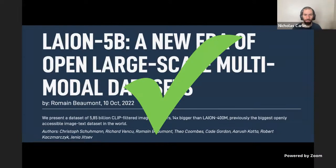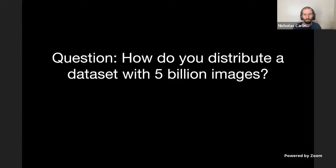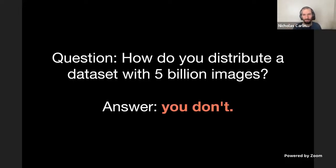So if you're going to train a model today, you're going to use something like this. But that brings up a question: how do you distribute a dataset with 5 billion images? The answer is you don't. You don't actually distribute 5 billion images — it's a couple hundred terabytes. Storage is expensive, bandwidth is expensive. There are also privacy, copyright, and legal reasons you wouldn't want to. So instead, what people do is distribute a much simpler data structure: just a list of URLs to download and the corresponding captions.